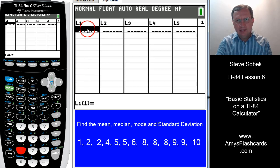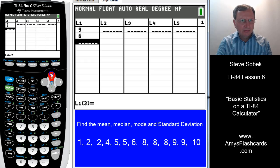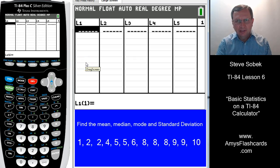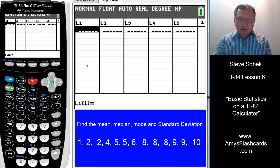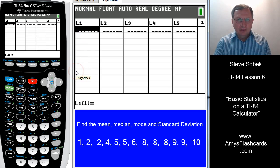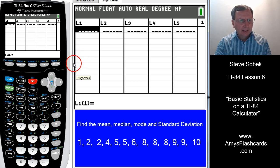Our cursor is already in position in list number one. If you already have some data values in here, you could just use your up arrow key, highlight the first one, and hit delete to clear out the existing data values. If you had a lot of data values, there's a faster way to delete them, and I'll show you that a little bit later on.